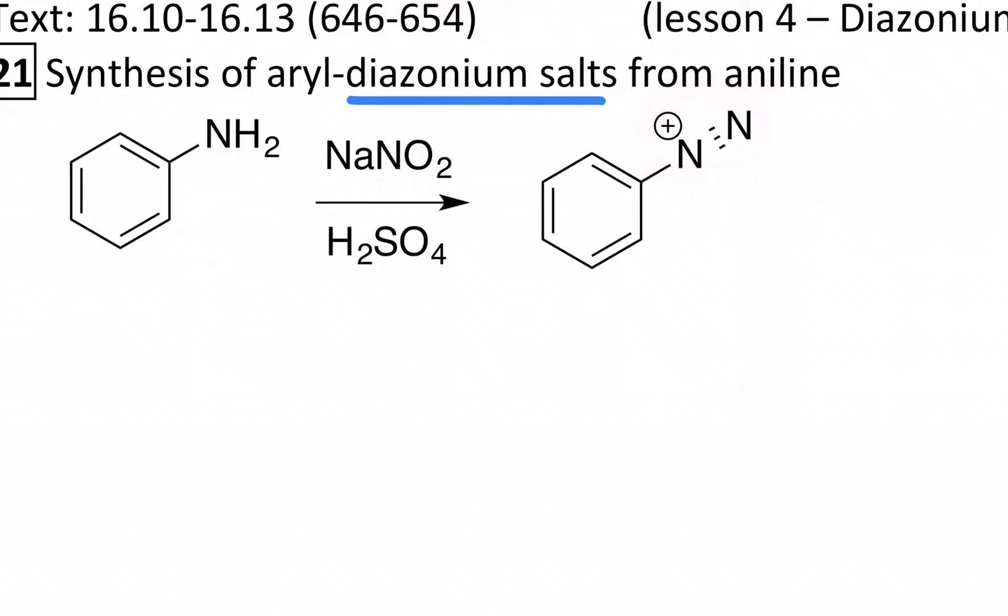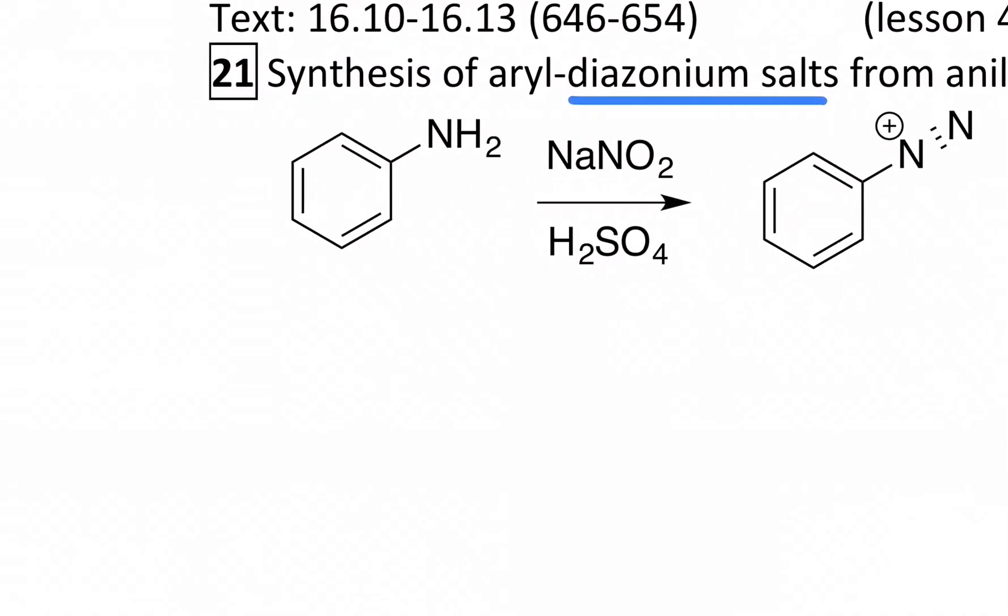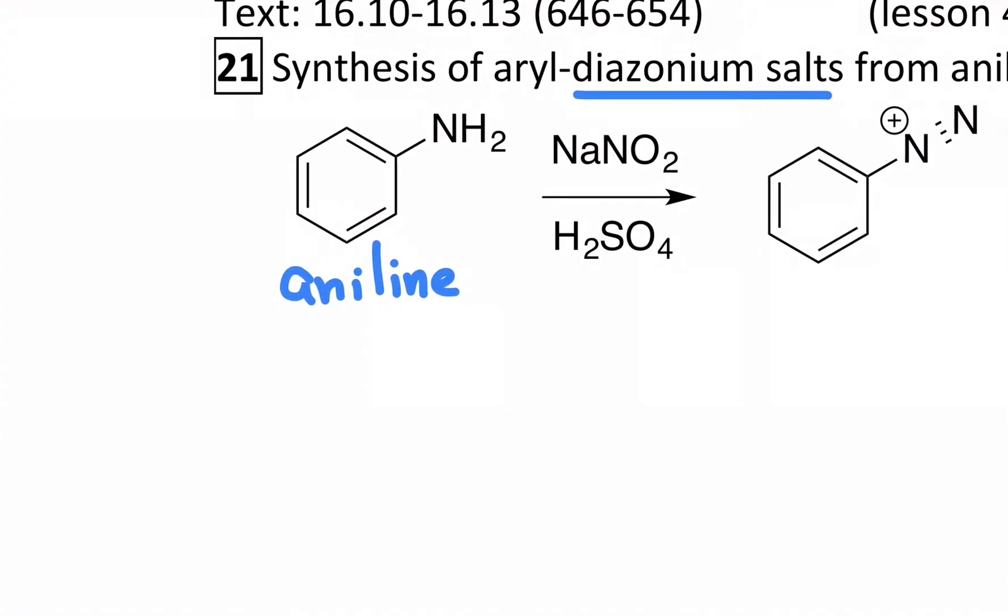We're going to look at how we put it on the ring, and then how we can use it to do special types of substitutions where we specifically replace the diazo with a different kind of group. They actually start not from benzene but from aniline, so we can only use this if we first make aniline, so it's worth showing just how you make aniline in the first place.